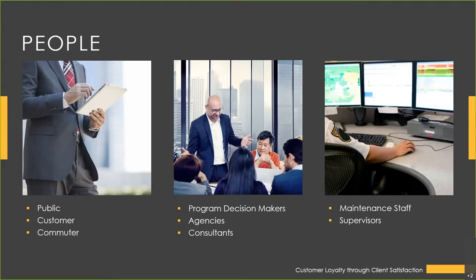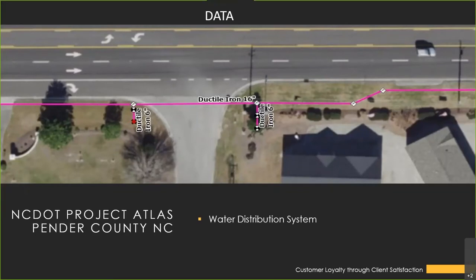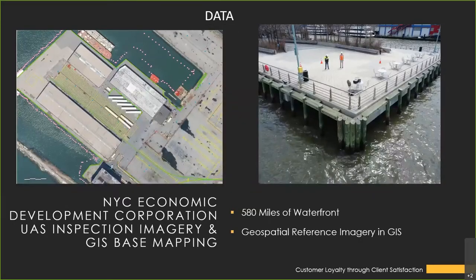On the data side, some assets are underground — in this case it's a water distribution line in Pender County, with aerials and parcel lines showing asset locations. GIS has a robust database behind it, so database entries for a water line would include the type of line, the size, and when it was installed.